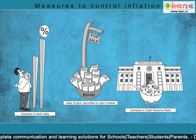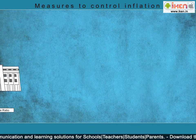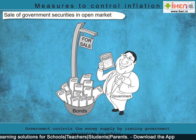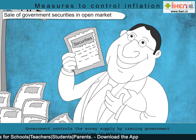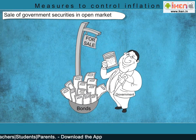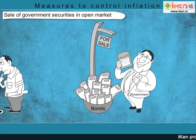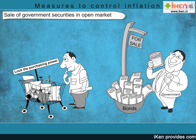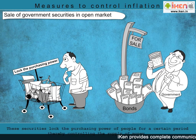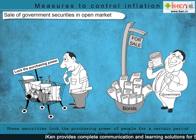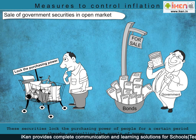Sale of government securities in the open market. The government controls the money supply by issuing government securities to the public. Government securities are issued to raise the funds necessary to pay for government expenses. These securities are bonds and debentures with a certain maturity period. They lock the purchasing power of the public for a certain period. Therefore, the sale of securities can help regulate inflation.